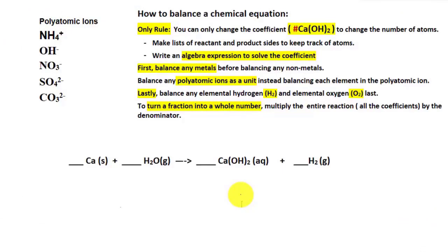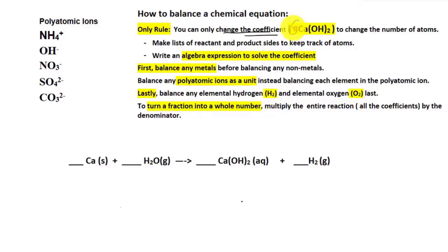There is only one rule when it comes to balancing a chemical equation, and that is you can only change the coefficient number — the number in front of the chemical formula.